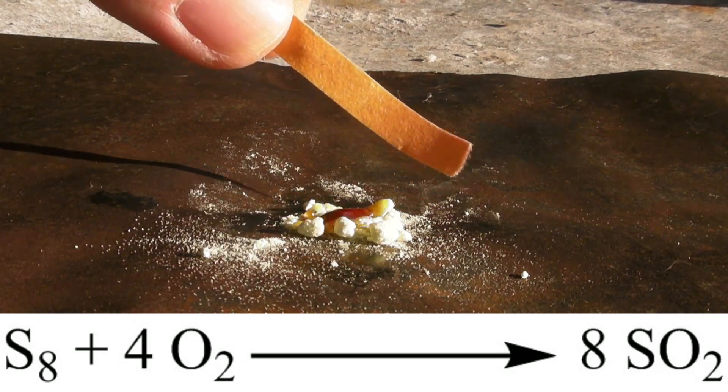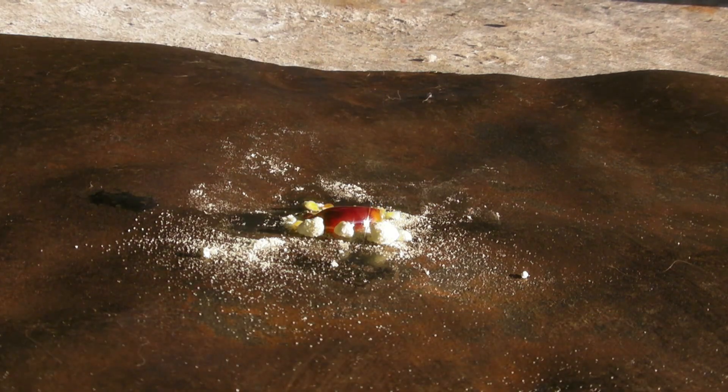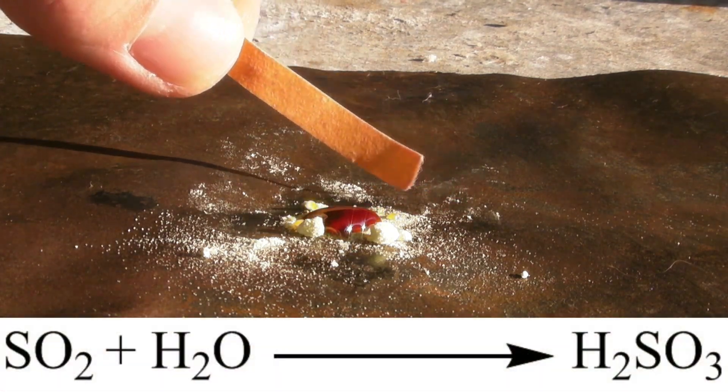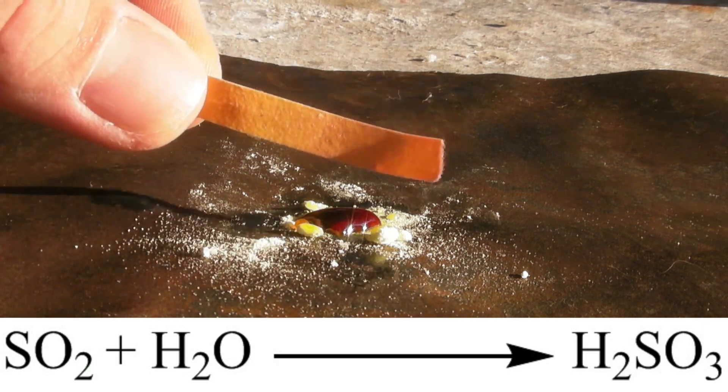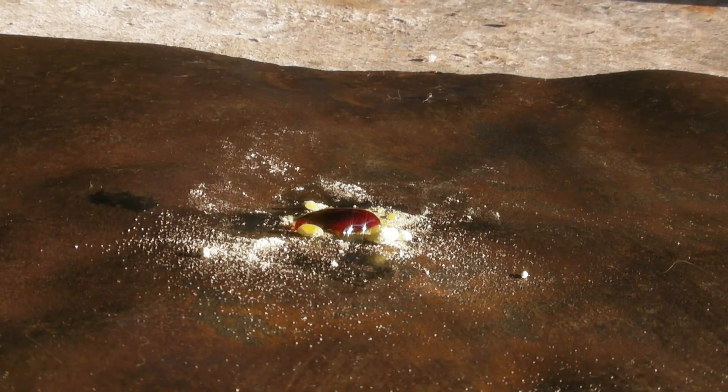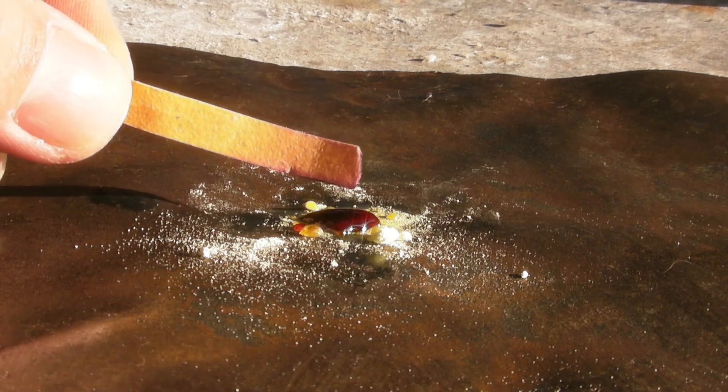Sulfur dioxide reacts with water to form sulfurous acid, which can be shown with a wet pH paper. That a flame is present is indicated by the paper getting burned close to the sulfur.